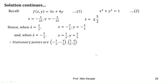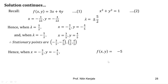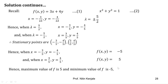Now we substitute these stationary points one by one in f to find its maximum and minimum value. Substituting the first point (−3/5, −4/5), we get f = −5. For the second point (3/5, 4/5), we get f = 5. Out of these two values, 5 is the maximum and −5 is the minimum. So the maximum value of f is 5 and the minimum value of f is −5.